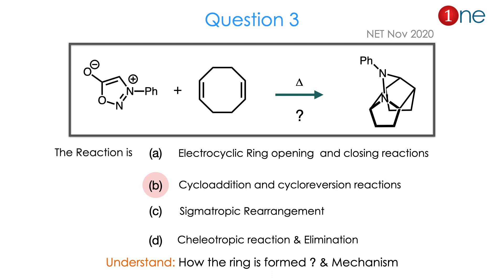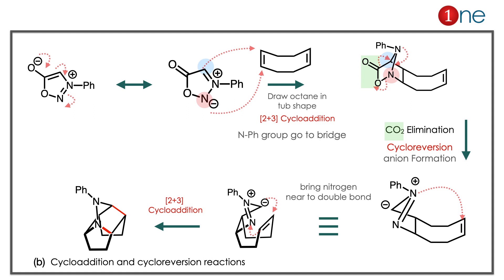Let us see how. The starting material has charges on the N–N–O ring, which is well known for undergoing [2+3] cycloaddition. We are reacting with octadiene, so a [2+3] cycloaddition occurs — 2 electrons from the diene side and 3 electrons from the N–N–C of the heterocyclic ring. This gives a new bicyclic system with a large strained ring. The strain must be relieved: CO2 elimination occurs because there is a good leaving group in the ring.